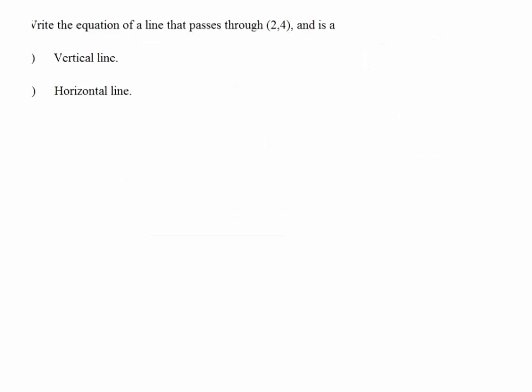If you're OK with this concept, we're going to move on. The next question is: write the equation of a line that passes through the point (2, 4), and the line is horizontal and vertical.